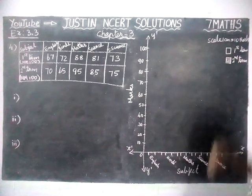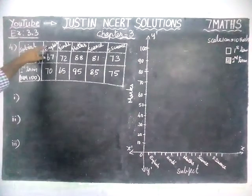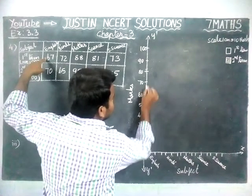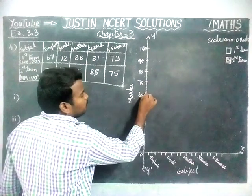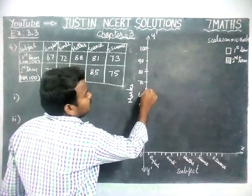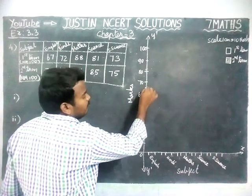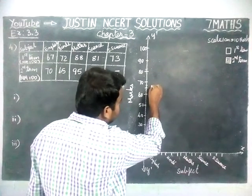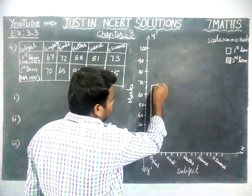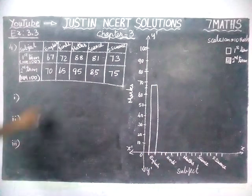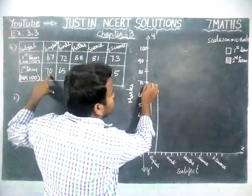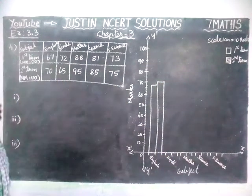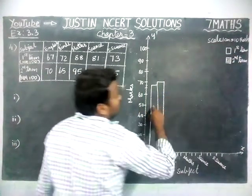For English, first term has 67 marks. To mark 67, in between 60 and 70, there are small lines. In the center is the darkened line at 65, then 66, 67. So we draw the bar up to 67 for first term. Then for second term, 70 — we don't have any problem drawing that. First term is the empty box, second term we use cross lines.